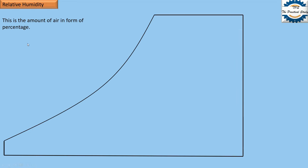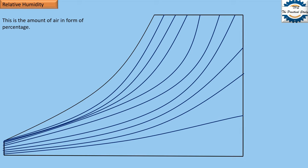Relative humidity is the amount of water vapors expressed as a percentage. On the psychrometric chart, these are the relative humidity lines with their corresponding scale. One important point: this is the saturation line where humidity is 100%, meaning the air is fully saturated and there is no more possibility for absorption of additional water vapors.